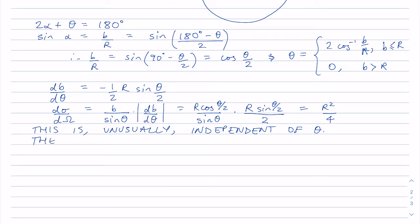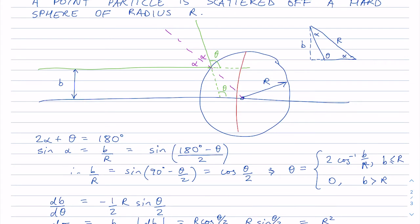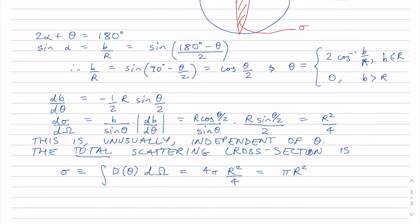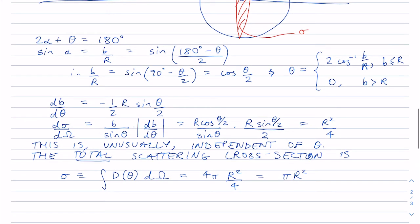And then we can define the total cross-section. And in our case, because it's going to be independent of theta, it's just going to be 4 pi times r squared on 4, or pi r squared, which equals the cross-sectional area of our circle. So we think of this kind of cross-sectional area in here. That's the total cross-section, sigma. So this kind of explains to us a little bit about what the cross-section and the differential cross-section actually mean, and how they relate to each other.